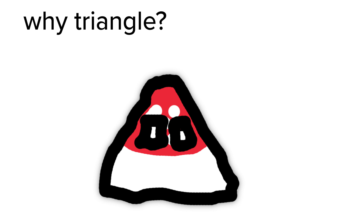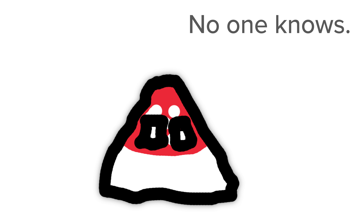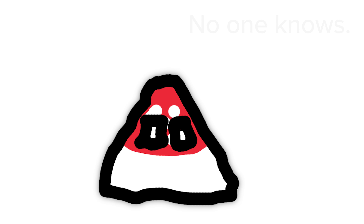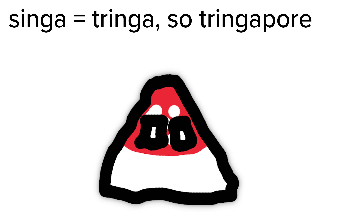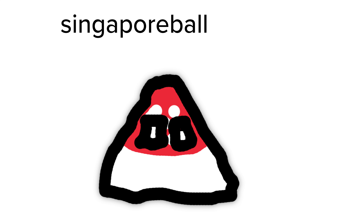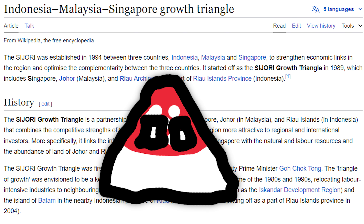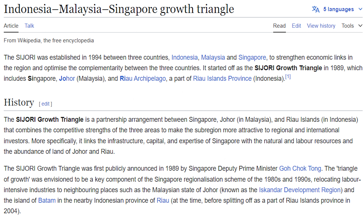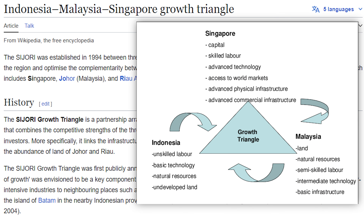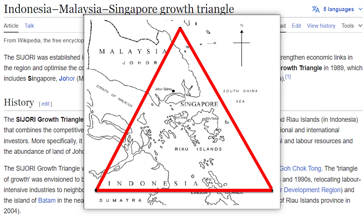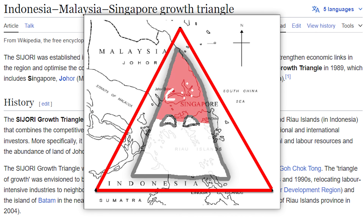Unlike the other official exceptions, the official real reason is actually unknown, but the most popular one is a simple pun — that 'Singa' kind of sounds similar to 'triangle,' and therefore it's satisfying to say 'Tringapore.' It would be very awkward to say 'Singapore ball' — that doesn't roll smoothly off the tongue. Another theory is the Indonesia-Malaysia-Singapore Growth Triangle, an organization founded in 1994 between these three countries to strengthen economic links, and it is known as 'the Growth Triangle' — so that's why Singapore is a triangle.